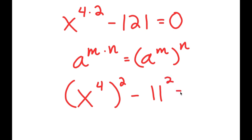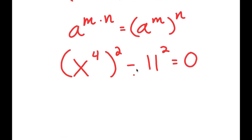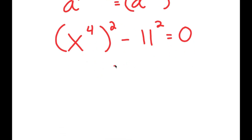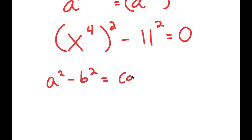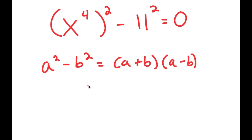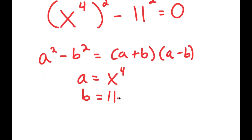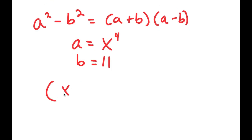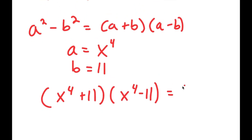The reason we do that is so we can use an important algebraic property: if I have something in the form a squared minus b squared, this equals a plus b times a minus b. In this case, a is x to the power of 4 and b is 11. So I get x to the power of 4 plus 11, times x to the power of 4 minus 11, which equals 0.